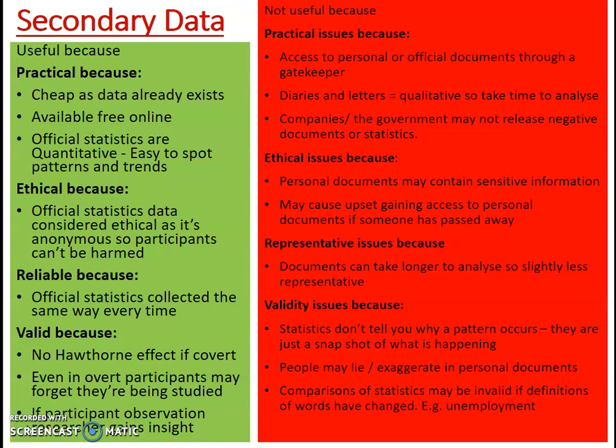Secondary data, particularly statistics, are generally considered ethical. Most official or unofficial statistic data is completely anonymous — you don't have names next to the data. Crime statistics just give you how many crimes took place; school achievement data gives you the number of grades each school achieved rather than which individual students got what. That makes it quite ethical. Newspaper documents are also ethical because journalists write articles that are already in the public domain.